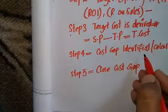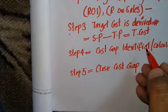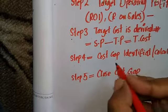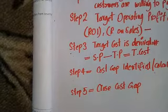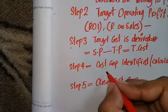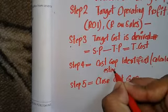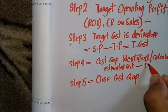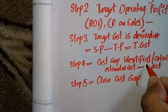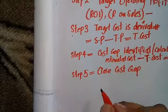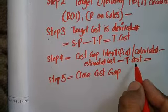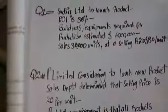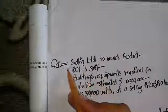The cost gap is equal to: estimated cost minus target cost. So the balance remaining between the estimated cost and the target cost is the cost gap. We will discuss how to close this cost gap, and there is a question here to work through.